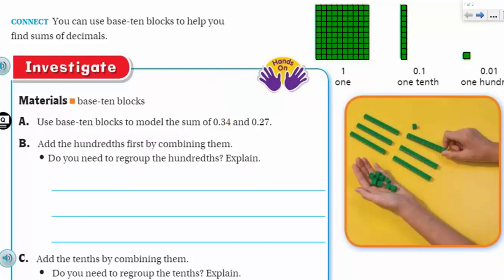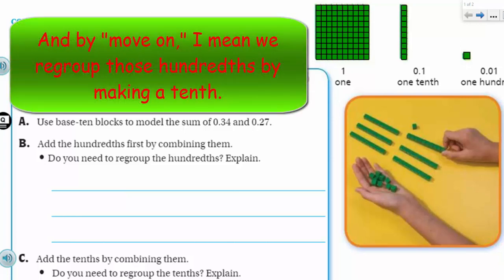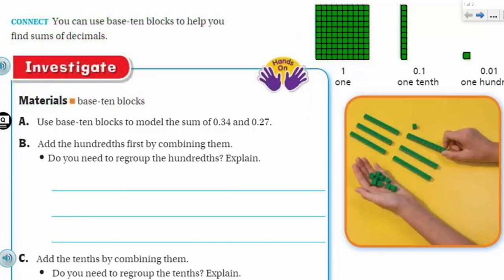First thing says use base-10 blocks to model the sum of 34 hundredths and 27 hundredths. Add the hundredths first by combining them. We have a 4 in 34 hundredths and we have a 7 in 27 hundredths in the actual hundredths place.